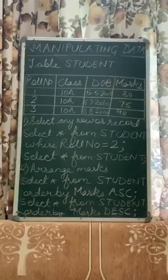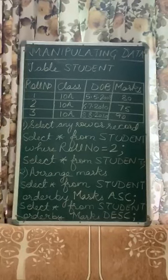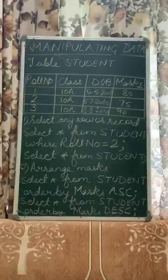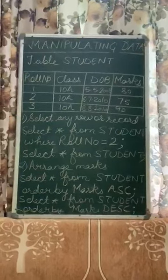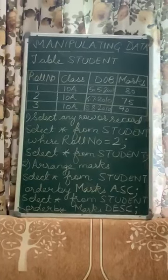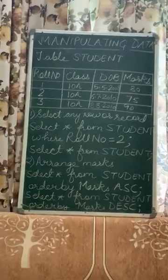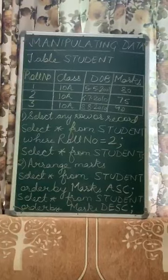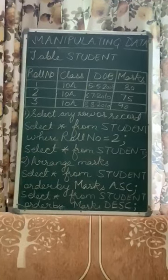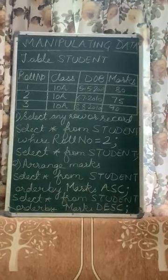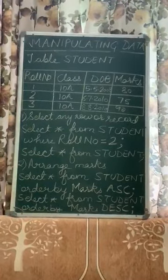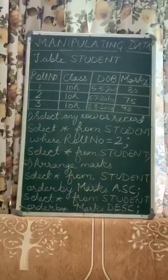The asterisk refers to all the data of the table. The table name must be in the same case as it was created. Similarly, RollNumber must be in the same case — R capital and N capital. Since we wanted the data of roll number 2, we write SELECT * FROM student WHERE RollNumber = 2. Do not forget the semicolon. Press enter and only the record of roll number 2 will be visible.